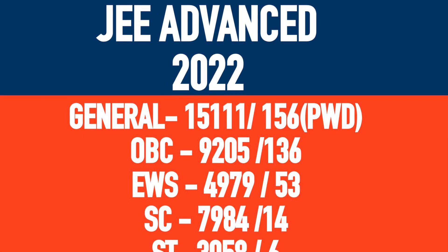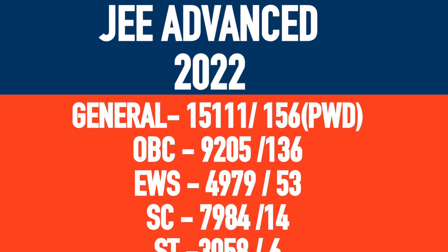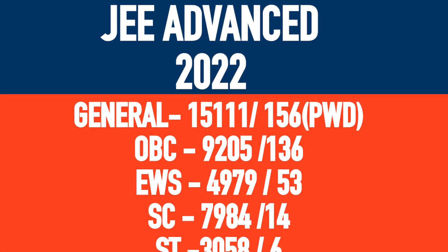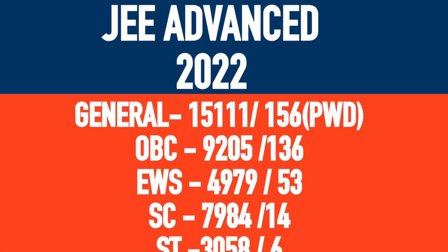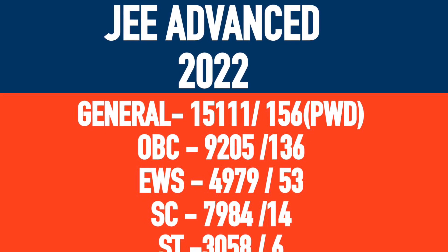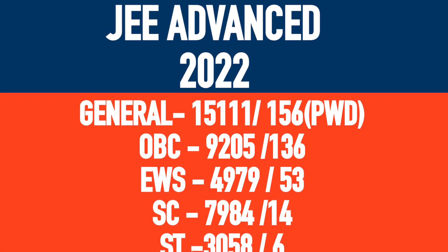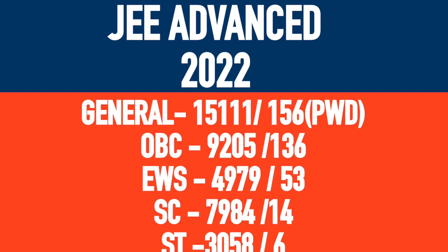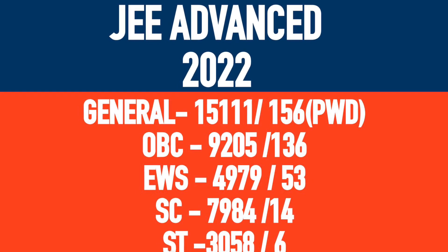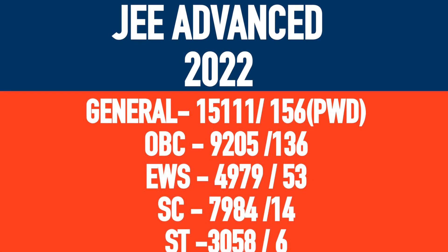General EWS: 4,979 candidates in counseling. EWS PWD: 53 candidates. SC category: 7,984 students qualify. SC PWD: 14 candidates qualify. ST: 3,058 students qualify. ST PWD: 6 candidates qualify. Overall, there are 40,712 students in counseling.